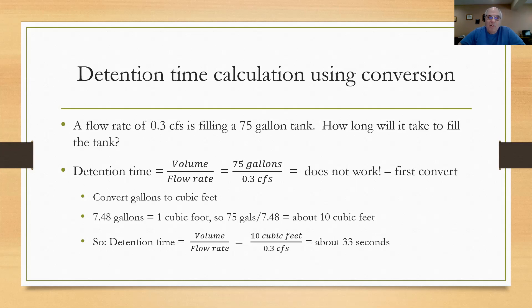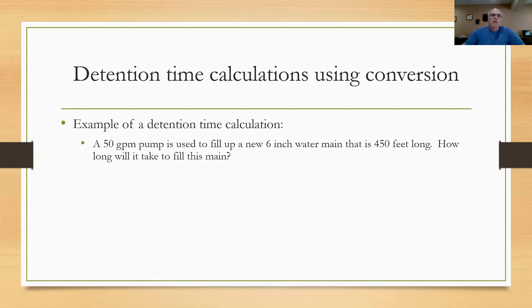I know that in one cubic foot, there's 7.48 gallons. So if I have 75 gallons divided by roughly 7.48, I'd come out to about 10 cubic feet. So now I can do my detention time problem because I have units that are the same. If I put the volume up on top in the numerator, that's the 10 cubic feet, and divide it by the flow rate of 0.3 cubic feet per second, I would see that it would take about 33 seconds to fill that tank up. Not very long.